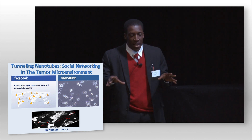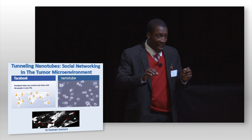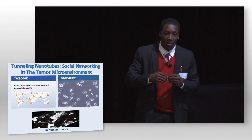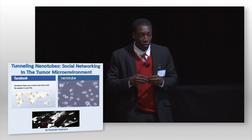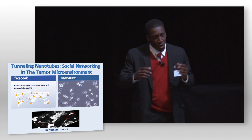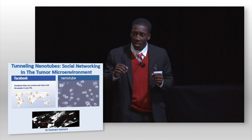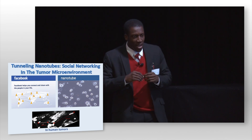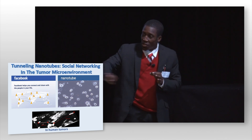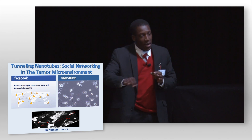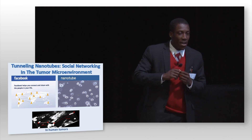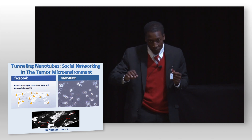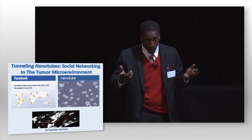We hypothesize that they are a novel example to explain how communication can occur between distant cells in an environment as complex as the tumor. Tunneling nanotubes are long but hollow extensions of the cell's membrane with a diameter of about 50 to 200 nanometers. This allows them to facilitate the transfer of proteins, mitochondria, ions, and viruses between cells. We found that even genetic material can transfer between cancer cells through nanotubes.